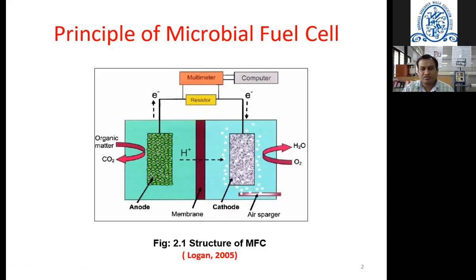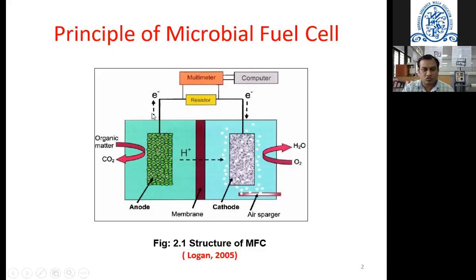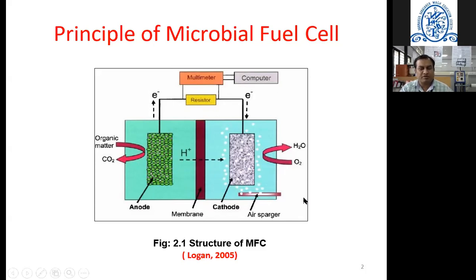In the cathode chamber, fresh water is available, and the wastewater is treated with the help of microorganisms after consumption of organic matter. So we are treating wastewater and also generating power — these are the two main benefits of MFC. Another benefit is metal recovery. From this diagram and explanation, you can understand what exactly the microbial fuel cell is, its components, and how it works. This is the basics of MFC with reference to Logan 2005.